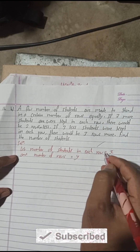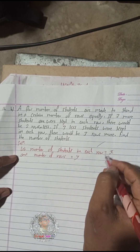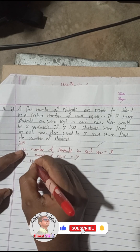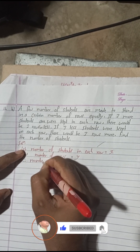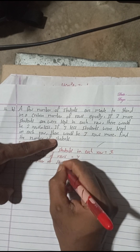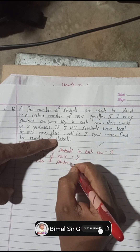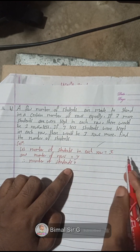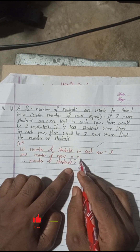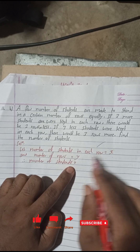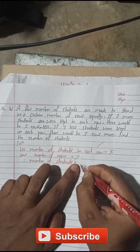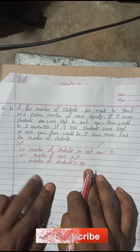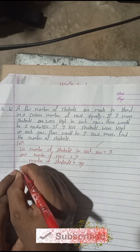Therefore, the number of students is equal to the number of students in each row, which is x, multiplied by the number of rows, which is y. That means the product of these two is the total number of students, so x × y equals the number of students. Now by the first condition: